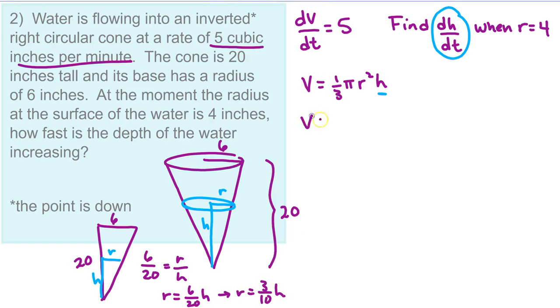So back to our equation for volume. We can substitute that in, 3 tenths h in place of r, square that, and simplify. So we're going to have 9 one hundredths multiplied by 1 third is 3 one hundredths times pi times h cubed. Now we differentiate dv dt equals 3 pi over 100 times the derivative of h cubed, 3 h squared dh dt.